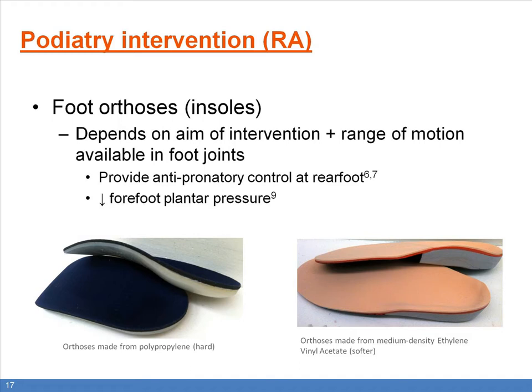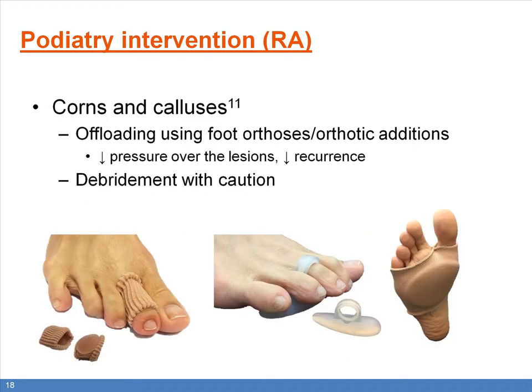However, if the range of motion at the foot and ankle joints is already very limited and the foot is overall a more rigid foot type, accommodative insoles, which are softer, can be used to distribute plantar pressures over the foot. This can be helpful for patients with pain over the ball of the foot. Painful corns and calluses, which usually form in response to high pressure loading over a certain part of the foot, can be offloaded using insoles as described, or through various toe paddings or forefoot paddings. Debridement of these pressure lesions in RA patients is at the clinician's discretion.